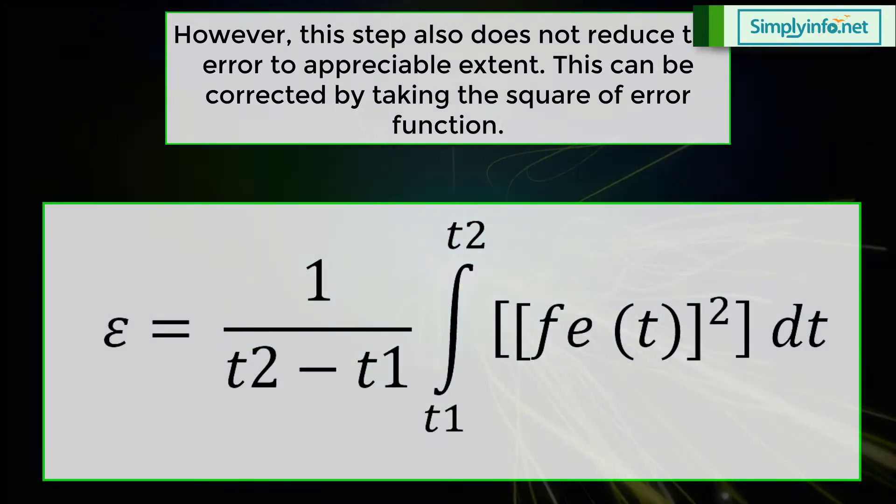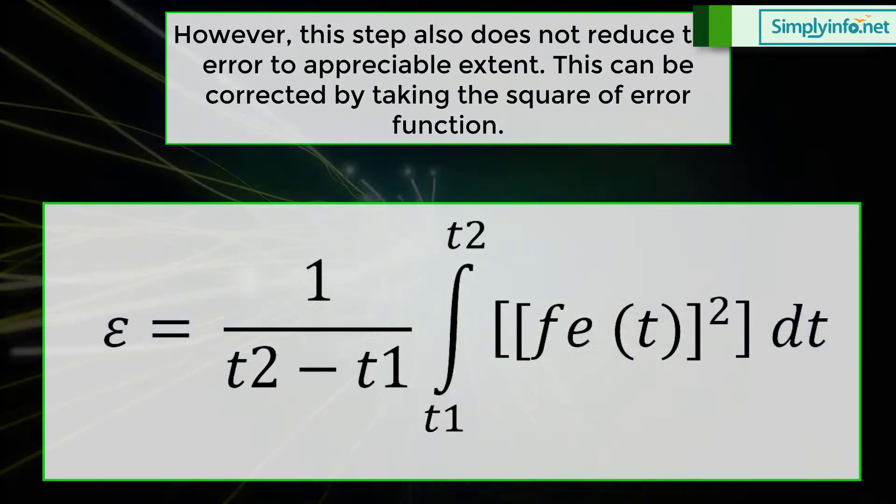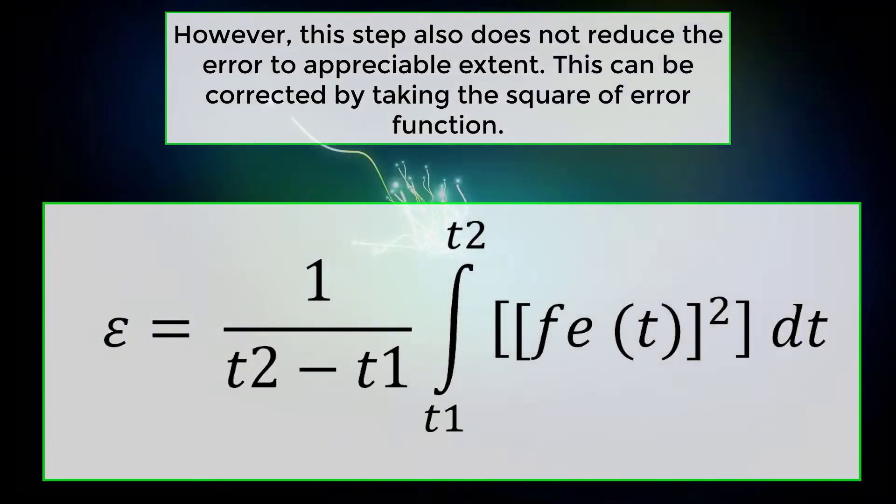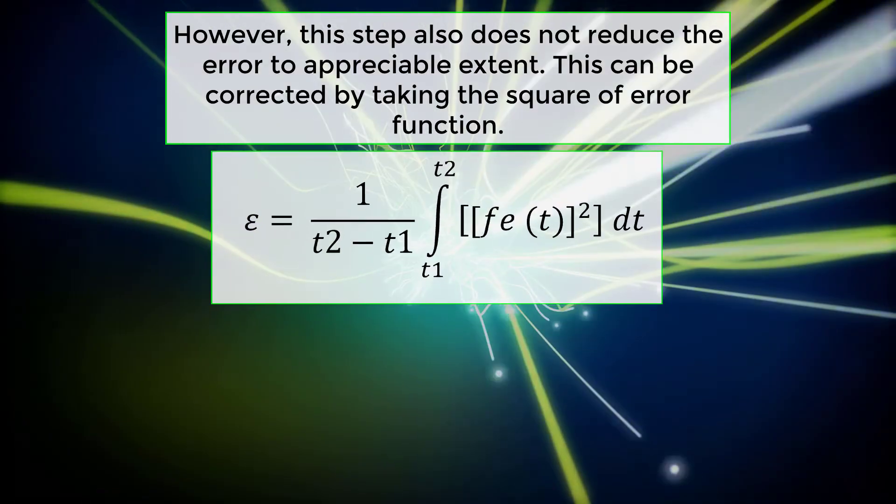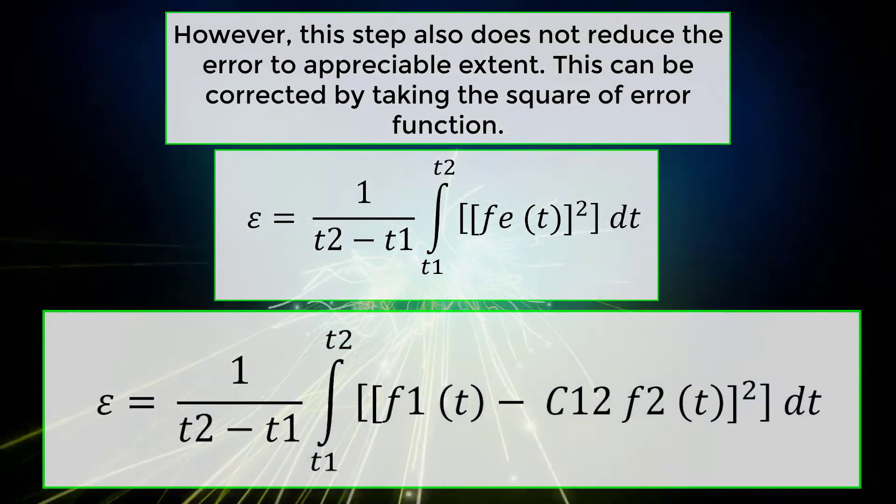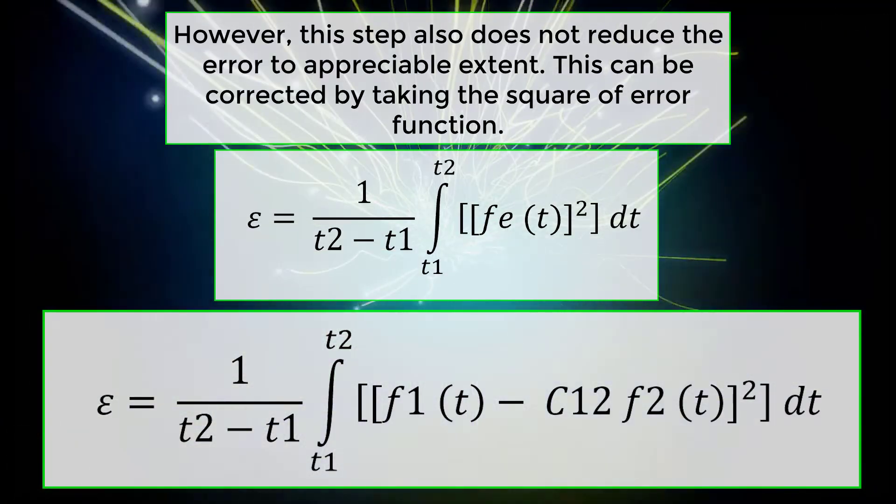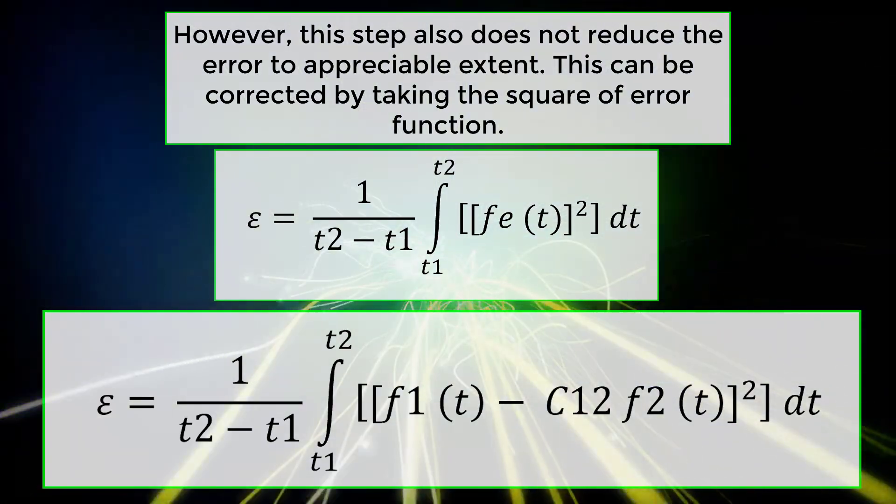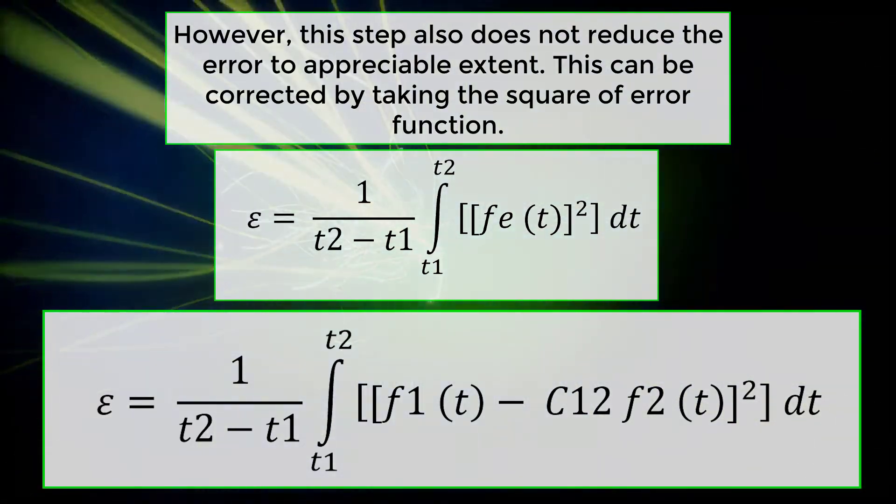Epsilon equals 1 by t2 minus t1 into integral t1 to t2 of [fe(t)]^2 dt. Epsilon equals 1 by t2 minus t1 into integral t1 to t2 of [f1(t) minus C12 into f2(t)]^2 dt.